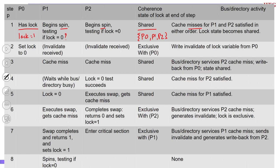P0 completes step 2. P1 and P2's blocks are removed but they are still in the read-lock loop, so they incur cache misses again. Both go onto the bus requesting the block. Suppose P2 wins the bus and gets the lock. P1 has to wait for the next bus transaction. Since P0 wrote 0 to the lock at end of step 2, when P2 gets the lock, the value is 0. P1 subsequently also gets a copy with value 0.